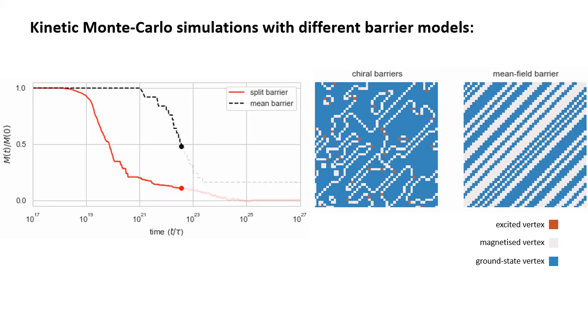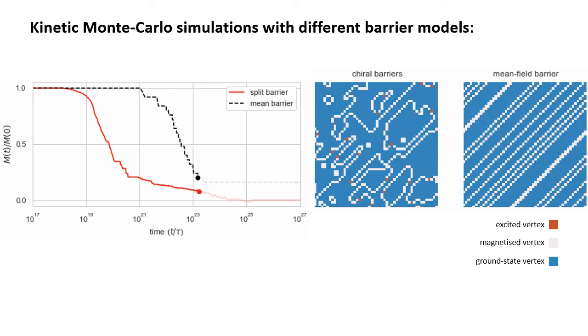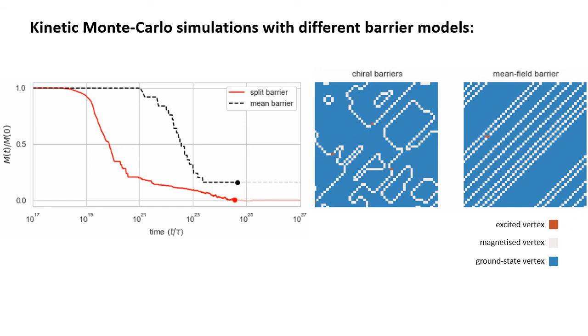The spatial evolution of magnetic order is also markedly different for both models. The split barrier model shows more inhomogeneous patterns compared to the stripe-like evolution in the mean field model.